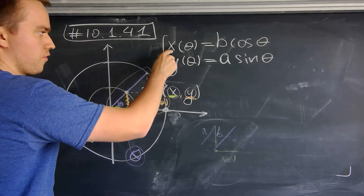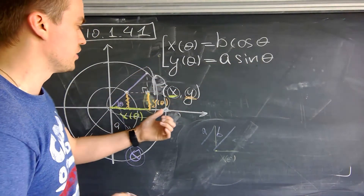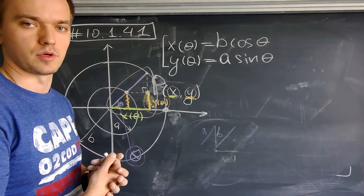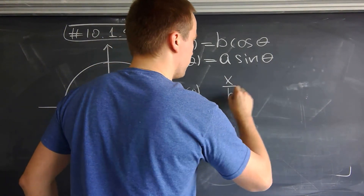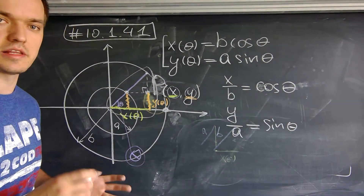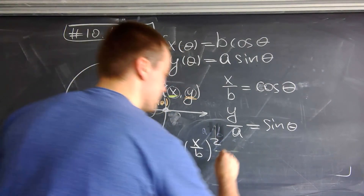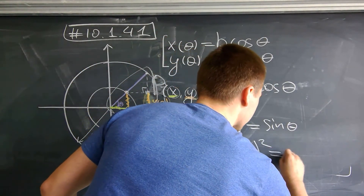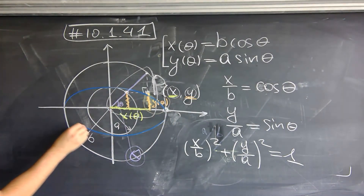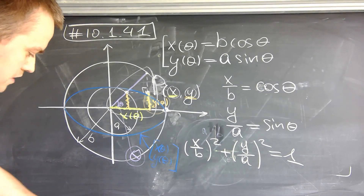Now I have the parametric equations for x and y in terms of theta. To find the shape, divide both sides of the x-equation by b and both sides of the y-equation by a. Using the Pythagorean identity cos²(θ) + sin²(θ) = 1, this gives exactly an ellipse: (x/b)² + (y/a)² = 1. So the curve described by point P is an ellipse.